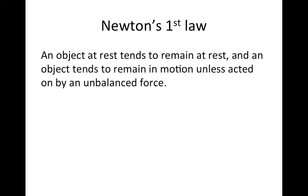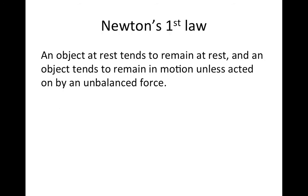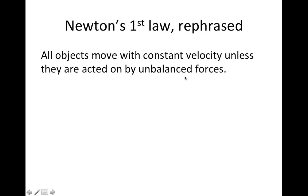I think that's probably an easier phrasing to work with in terms of understanding and working problems. So I would advocate instead using this phrasing for Newton's First Law: all objects move with a constant velocity unless they're acted on by unbalanced forces. That velocity could be zero — that'd be an object at rest with a velocity of zero, and it's going to have a constant velocity of zero. It stays at rest. Or it could be an object moving with some speed and direction, and that speed and direction stay constant until the object is acted on by those unbalanced forces.